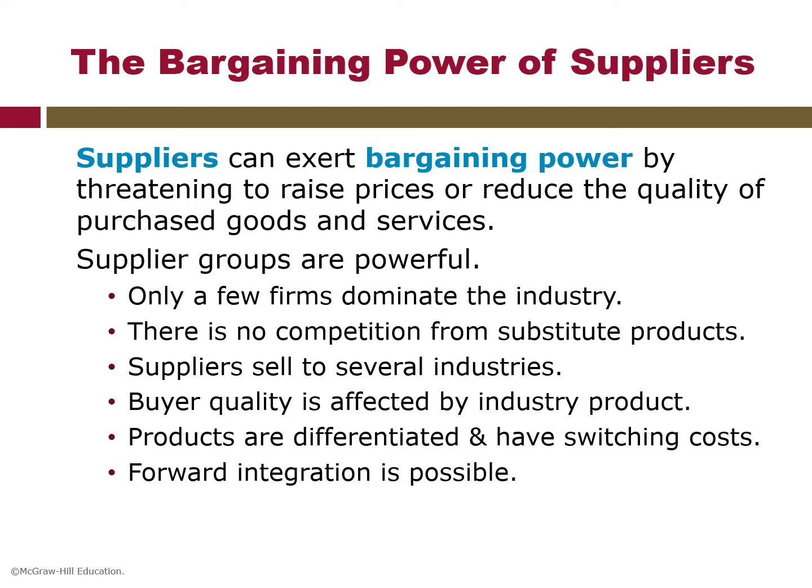The next force is the bargaining power of suppliers. Suppliers can exert bargaining power by threatening to raise prices or reduce the quality of purchased goods and services. Powerful suppliers can squeeze the profitability of firms so far that they can't recover the cost of raw material input. Supplier groups are powerful when the supplier group is dominated by a few companies and is more concentrated than the industry itself — suppliers selling to a fragmented industry can influence prices, quality and terms. Another condition is when the supplier group is not obligated to contend with substitute products for sale to the industry.